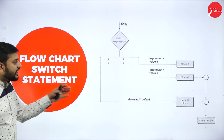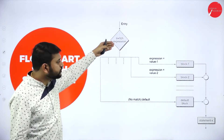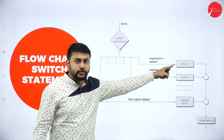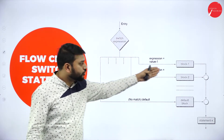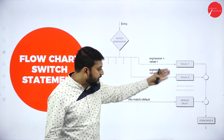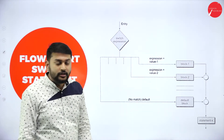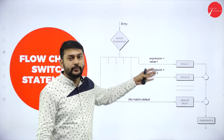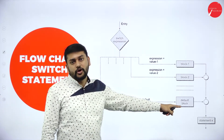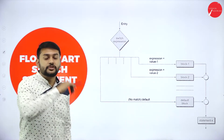Let's understand with respect to the flowchart. I have the switch expression. If the value is 1, block 1 will be executed. If the value is 2, block 2 will be executed. If the value is 3, block 3 will be executed — and so on. Suppose if I have an invalid entry, the default block will be executed. That's what you need to remember with respect to switch case.